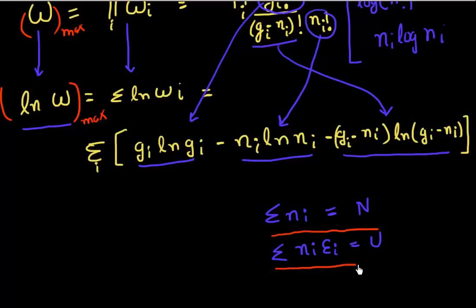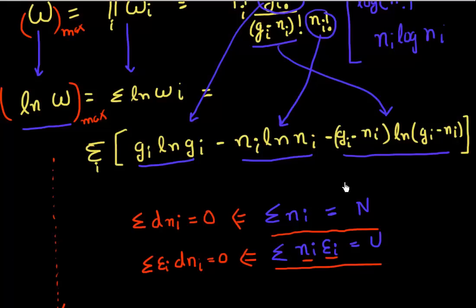Similarly, the total energy in my system — the total energy of these electrons — which is the number of electrons at each level multiplied by the energy at each level, is also a constant. So given these constraints, what I'm interested in is maximizing this total number of distributions.